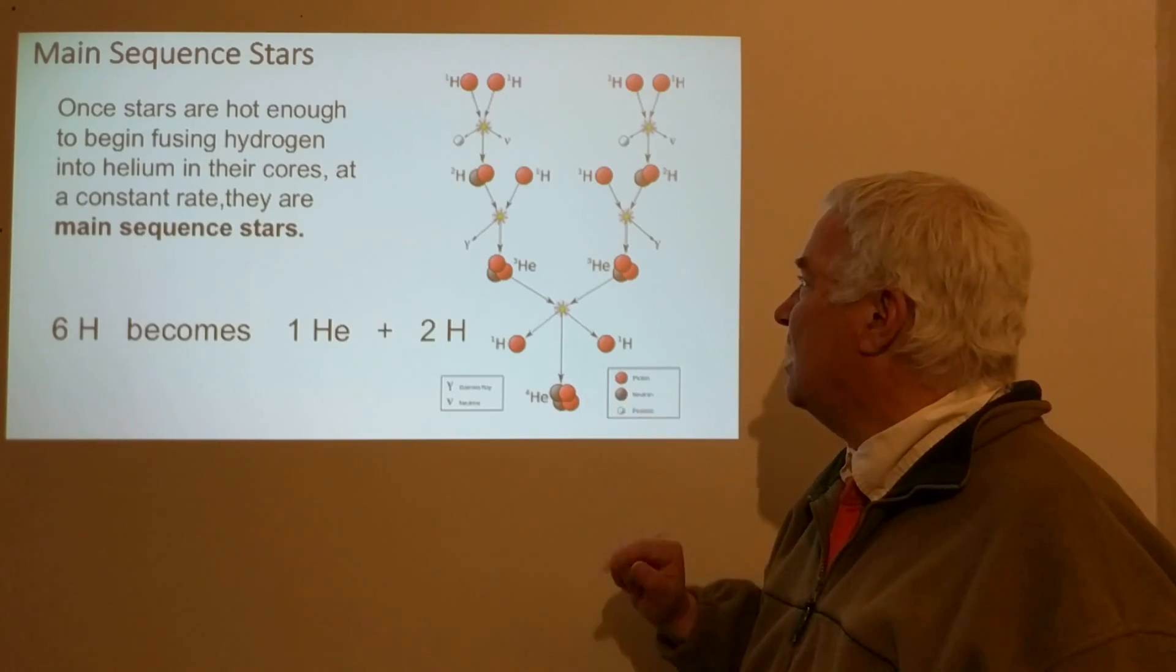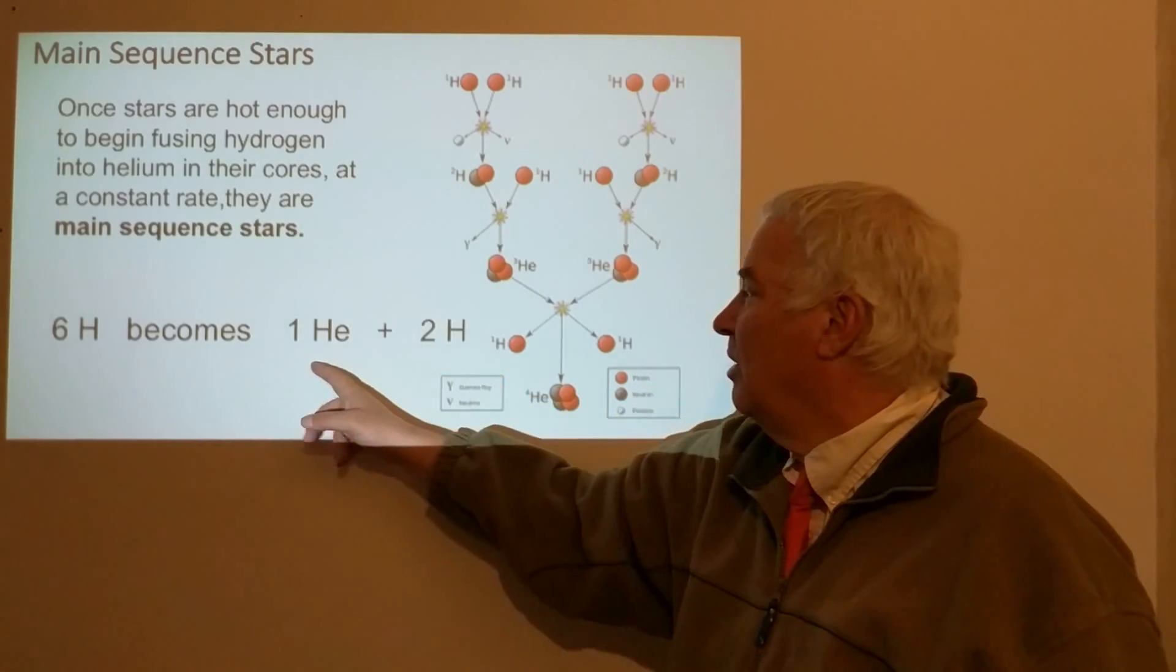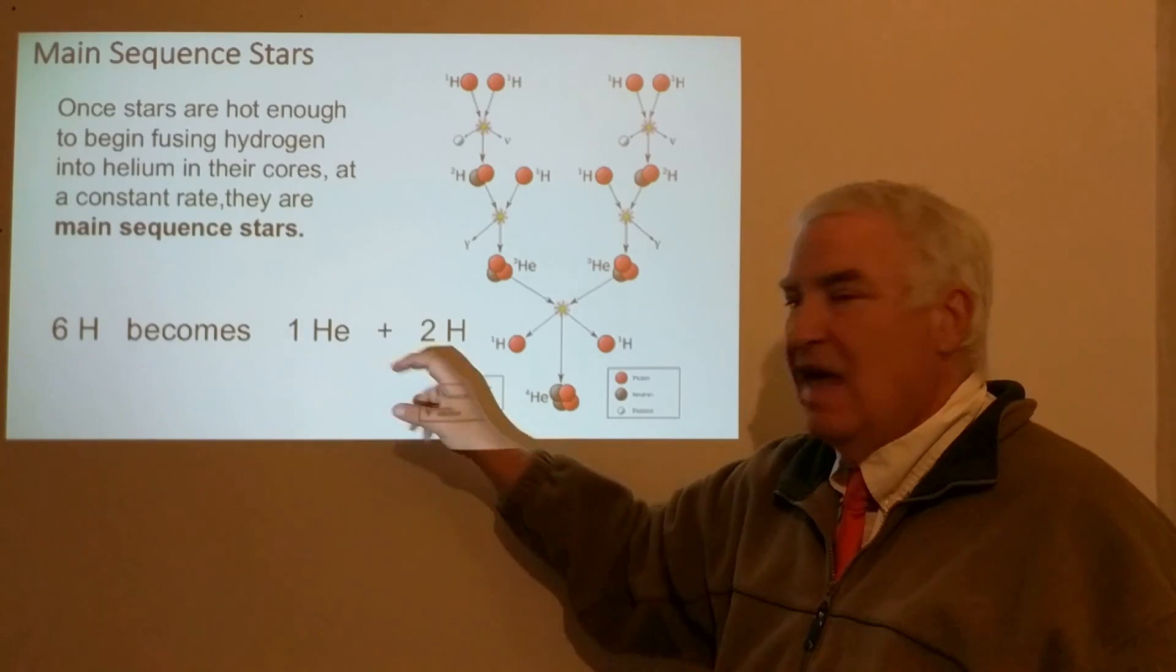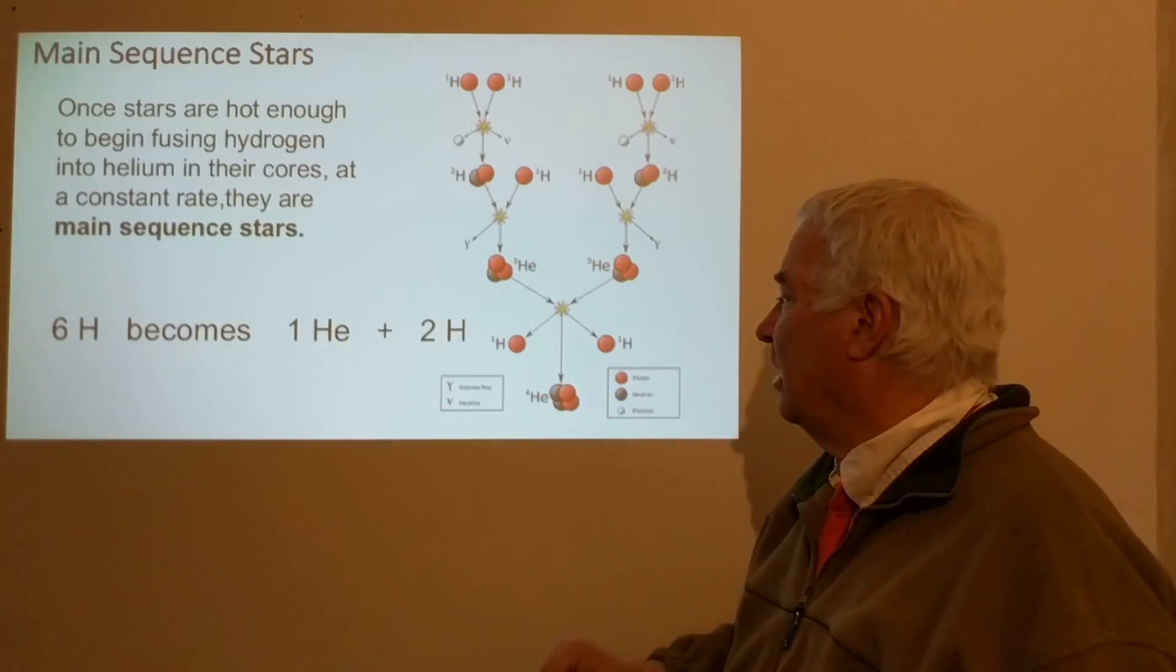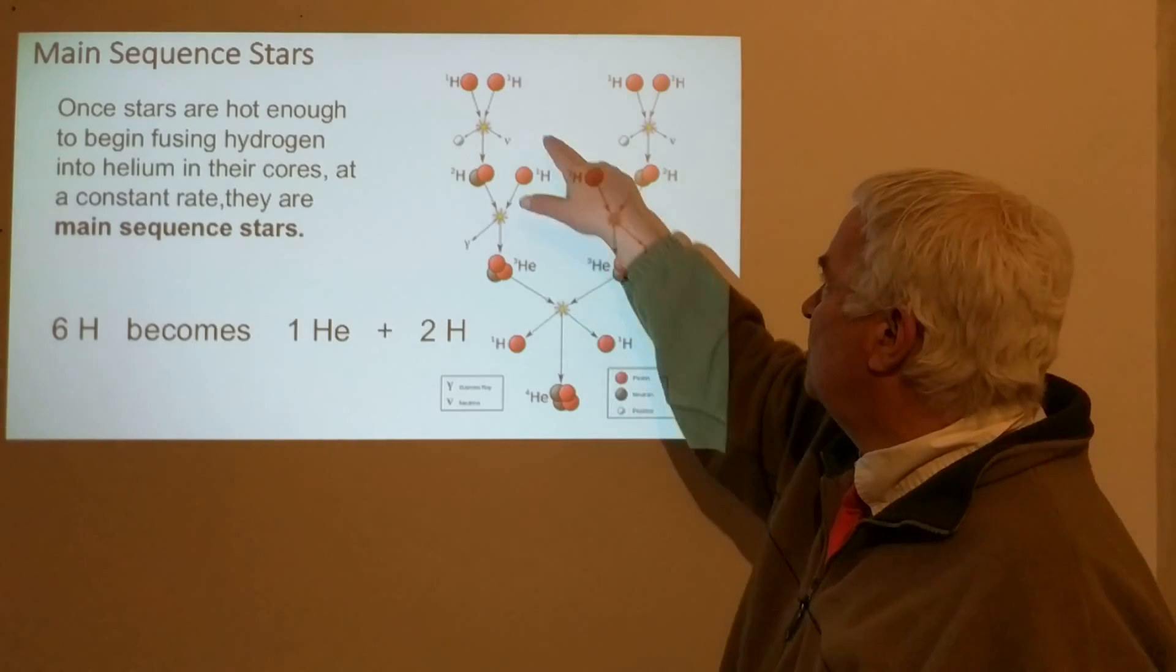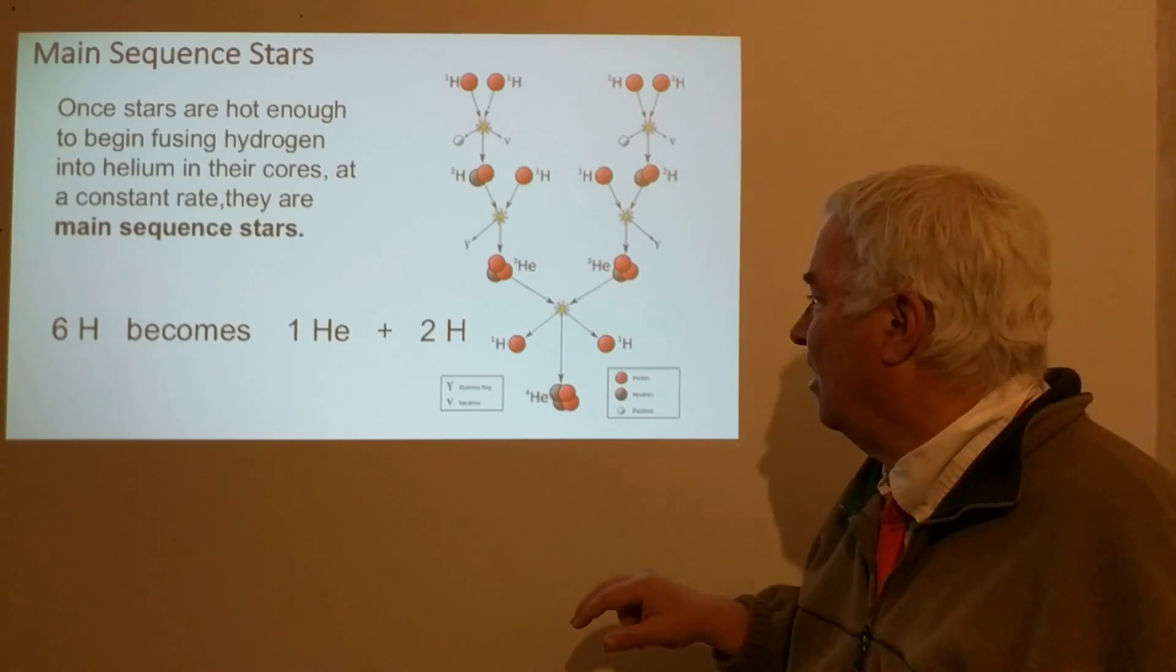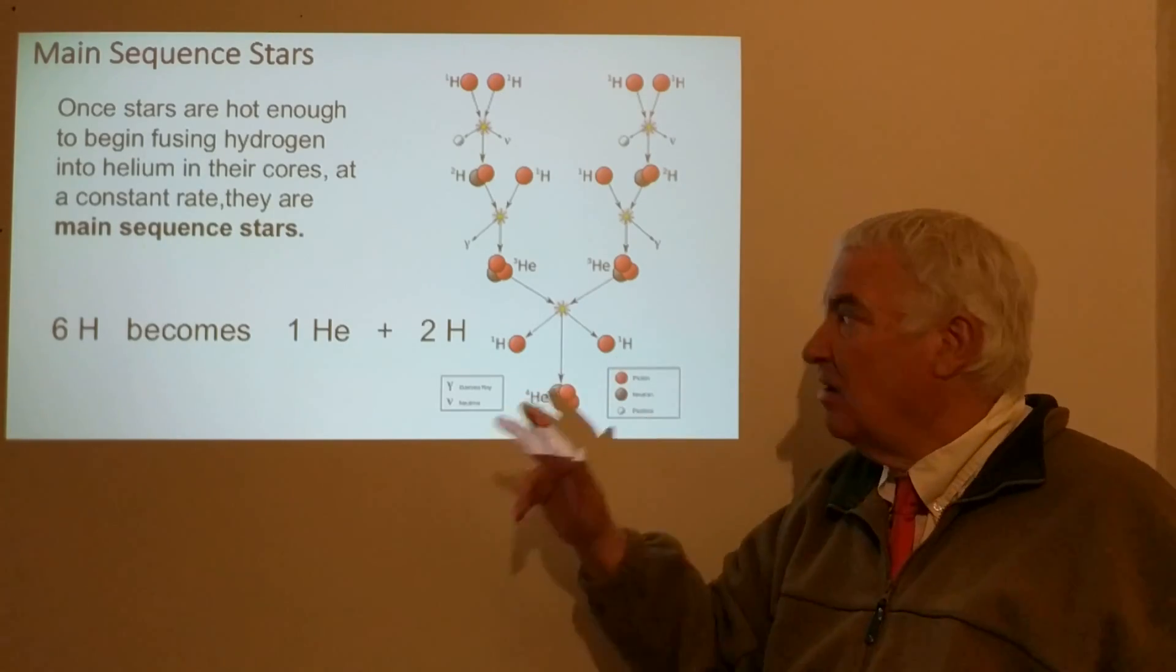We get several things out of this. We get the fact that six hydrogens become one helium and two hydrogens, which really means that the net is that four hydrogens become one helium, plus we end up with two gamma ray photons of light, two neutrinos, and the two protons are returned back to the system.